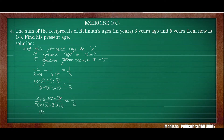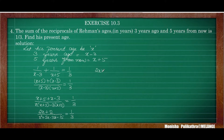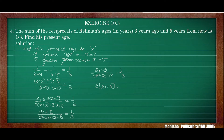So two x plus two divided by x squared plus two x minus fifteen equals one by three. Cross multiplying gives three into two x plus two equals x squared plus two x minus fifteen. That is six x plus six equals x squared plus two x minus fifteen. Shifting terms to the right: x squared plus two x minus six x minus fifteen minus six equals zero.